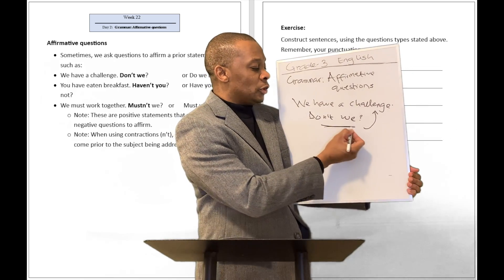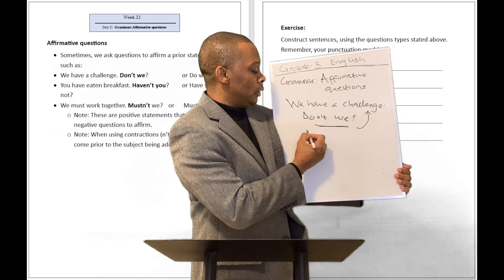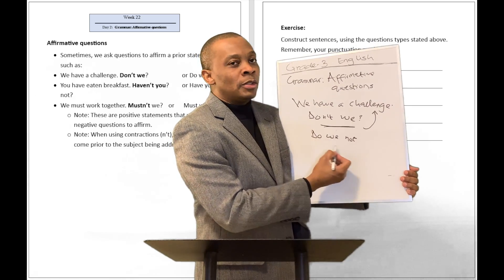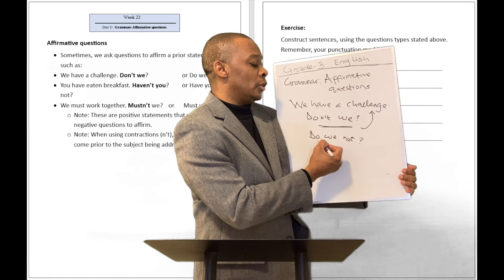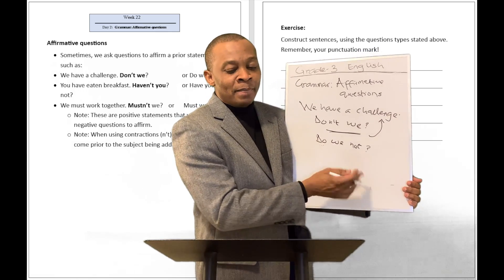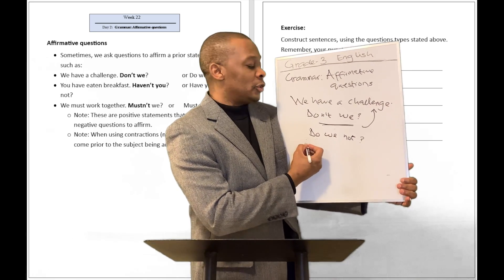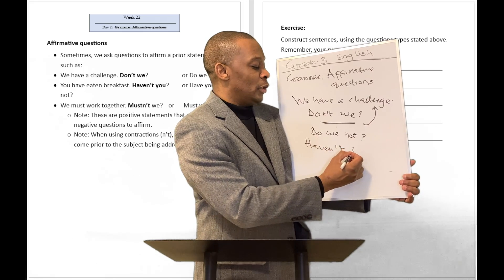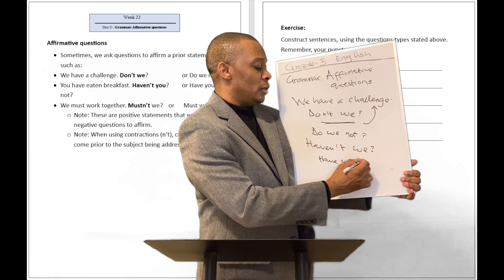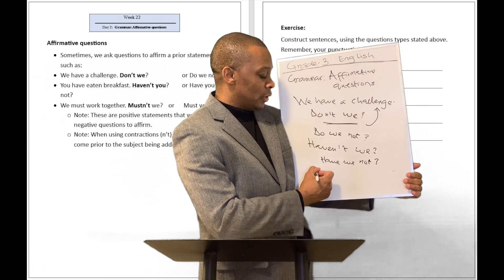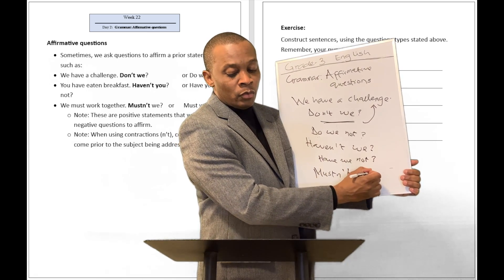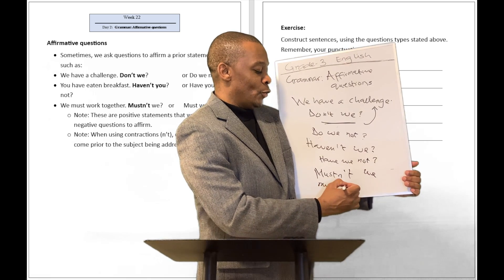When you use questions like "don't we" or "do we not" — "don't" is a contraction of "do" and "not." When you're trying to split it, you put the subject right in between the words "do" and "not," so you say "do we not" — not "do not we." Another type of affirmative question is "haven't we," which is "have we not." You can also ask "mustn't we," which is "must we not."